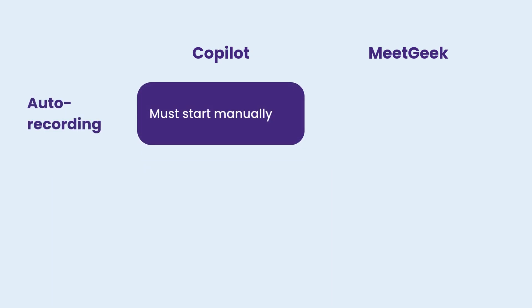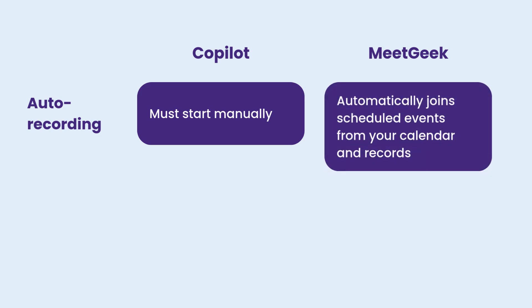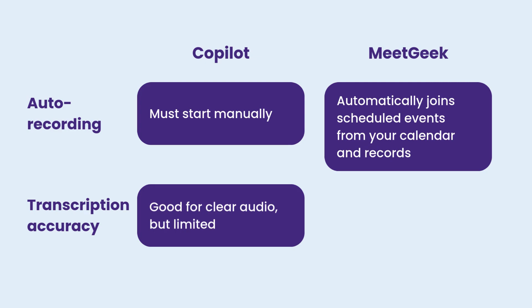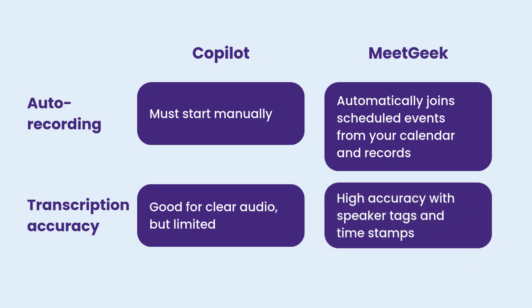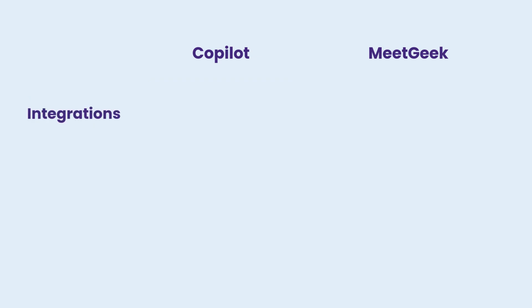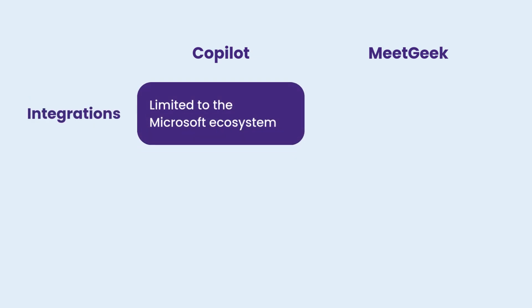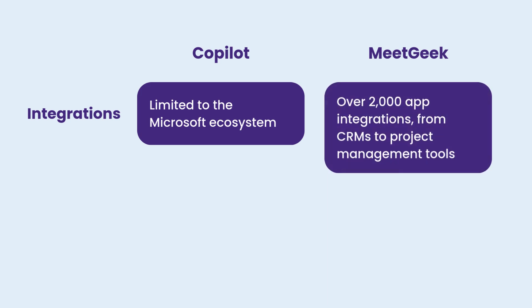Meeting recording on Teams must start manually, while MeetGeek automatically joins scheduled events from your calendar. Co-Pilot's transcription is good with clear audio, whereas MeetGeek has high transcription accuracy with speaker tags and timestamps. Regarding integrations, Co-Pilot is limited to the Microsoft ecosystem, while MeetGeek integrates with over 2,000 apps.